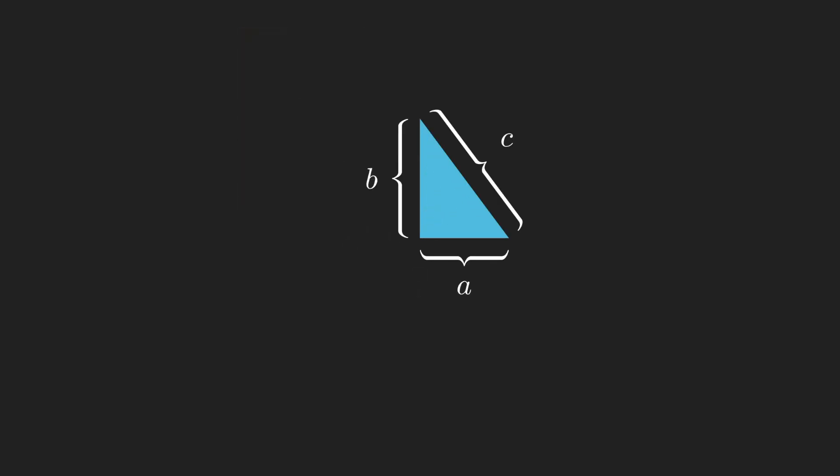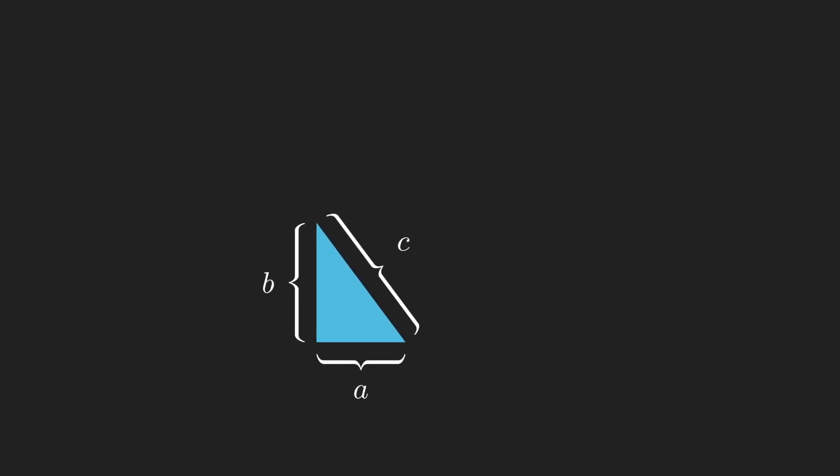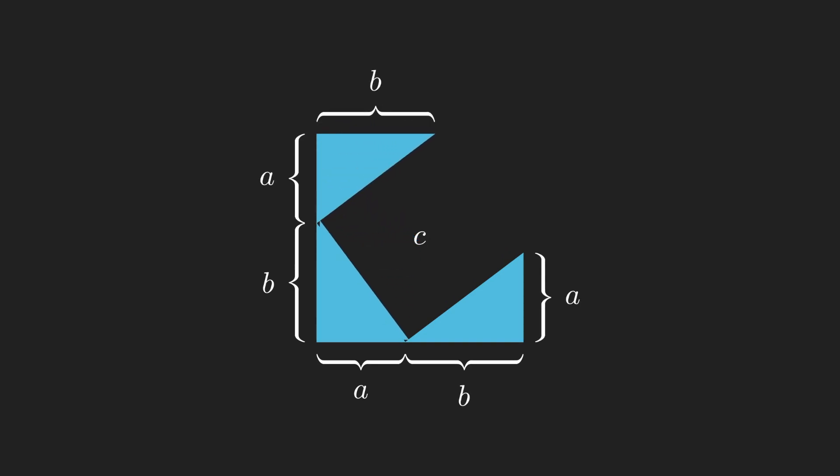We'll start with a right-angled triangle with sides A, B and C. Next, let's make four copies of this triangle and arrange them so that the sides A and B combine to make a square.